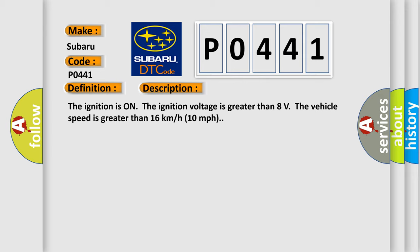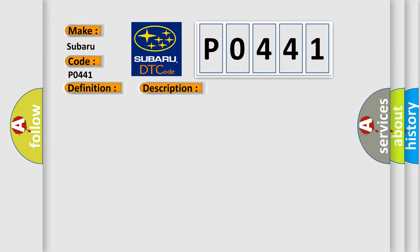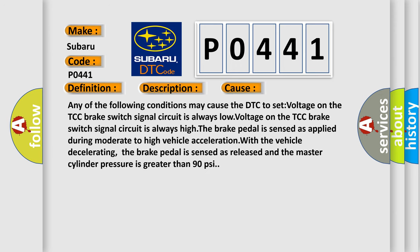This diagnostic error occurs most often in these cases. Any of the following conditions may cause the DTC to set: voltage on the TCC brake switch signal circuit is always low, voltage on the TCC brake switch signal circuit is always high. The brake pedal is sensed as applied during moderate to high vehicle acceleration with the vehicle decelerating. The brake pedal is sensed as released and the master cylinder pressure is greater than 90 psi.